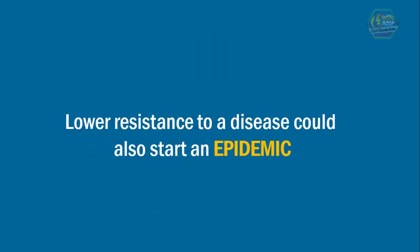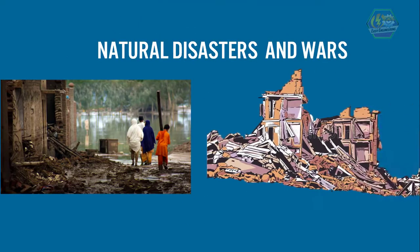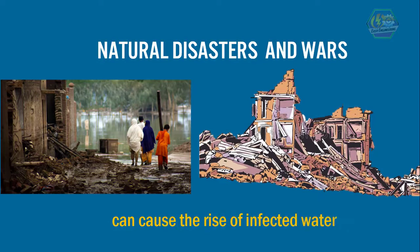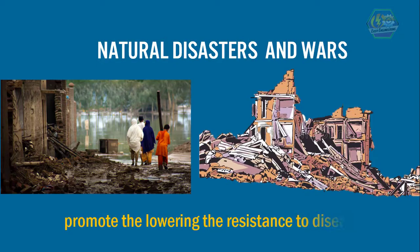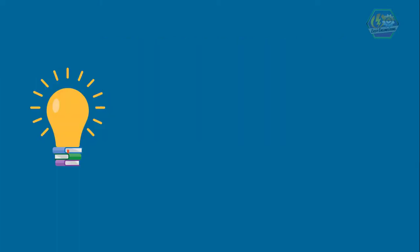Lower resistance to a disease could also start an epidemic. In places where poor nutrition is present, people tend to have lower resistance to disease, which causes an epidemic. And lastly, natural disasters and wars can cause the rise of infected water, which is very common, bringing in new diseases with it. Wars and disasters also promote the lowering of disease resistance in the population, and this starts an epidemic.